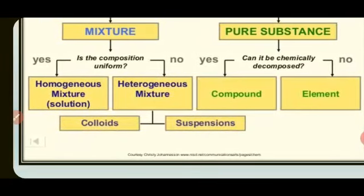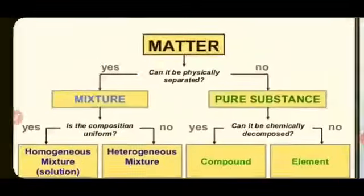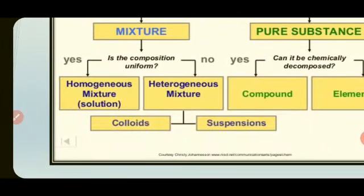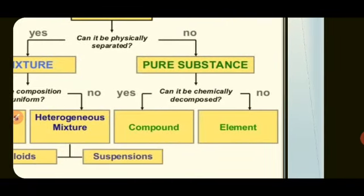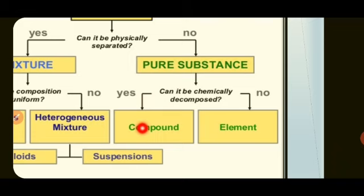How are mixtures classified? Based on whether they have uniform composition or not. If the composition is uniform, the mixture is called a homogeneous mixture. If the composition is not uniform, it is called a heterogeneous mixture. The heterogeneous mixture is further classified as colloids and suspensions. Pure substances are classified based on whether they are chemically decomposed or not. If yes, it is called a compound; if no, it is an element.